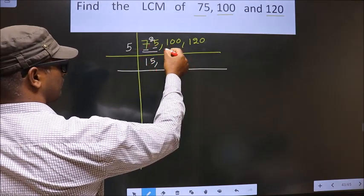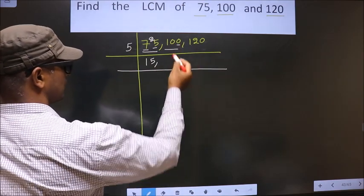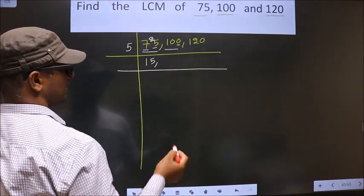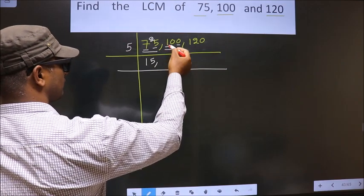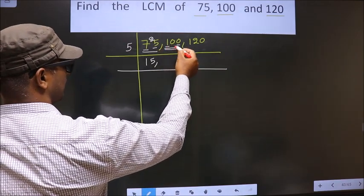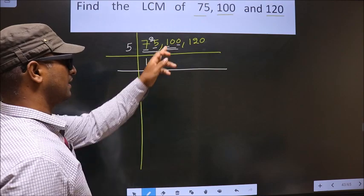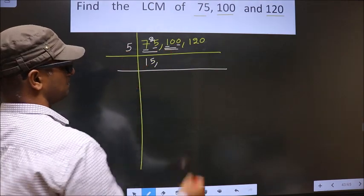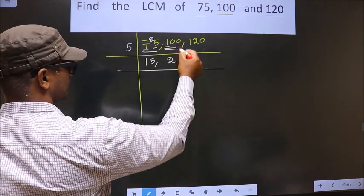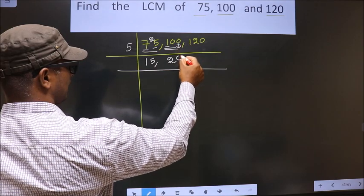For the next number, the last digit is 0, so this number is also divisible by 5. The first digit is 1, which is smaller than 5, so we take 2 digits, that is 10. When do we get 10 in the 5 table? 5 twos are 10. The 0 is carried down.